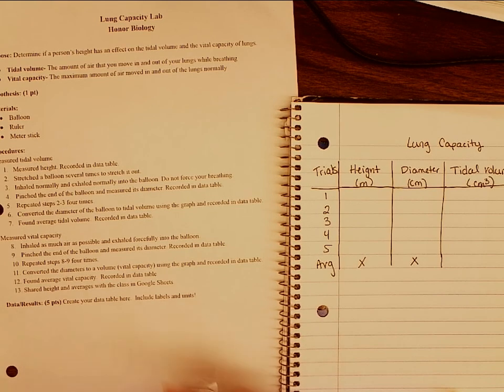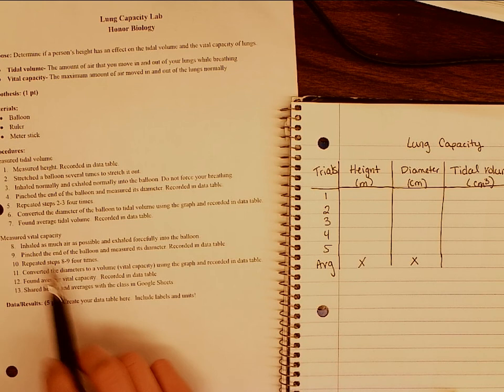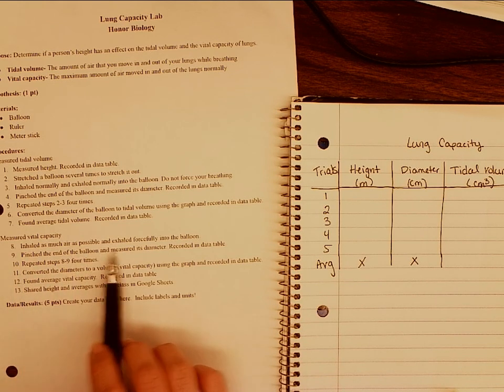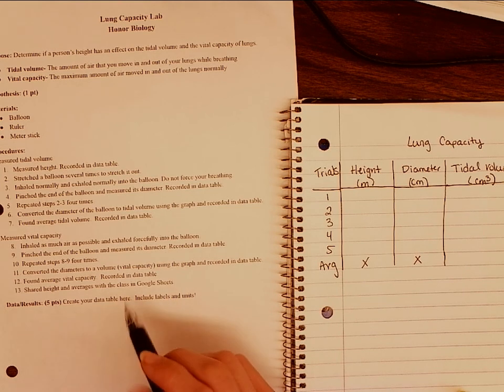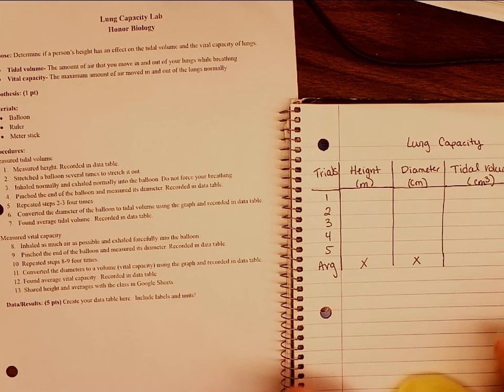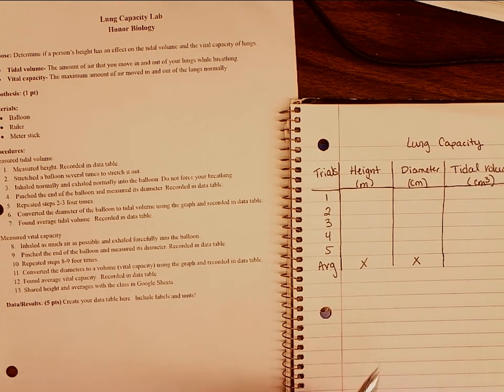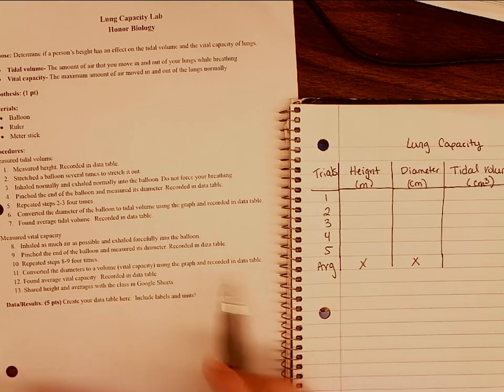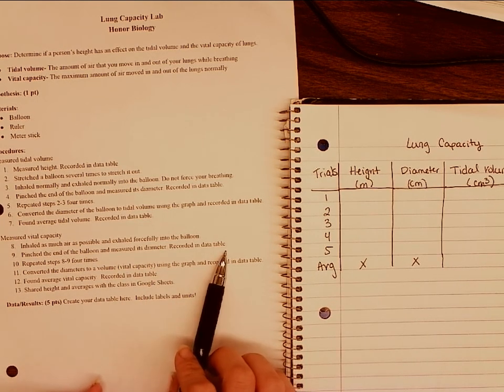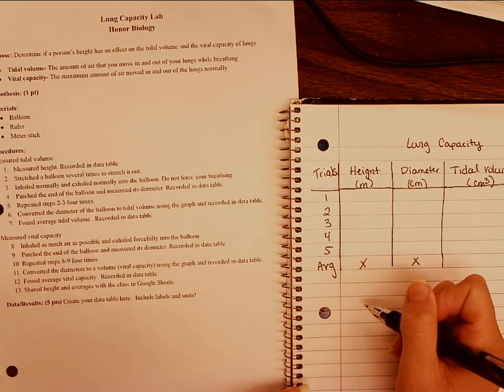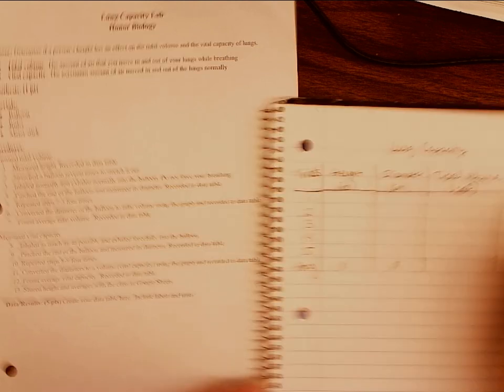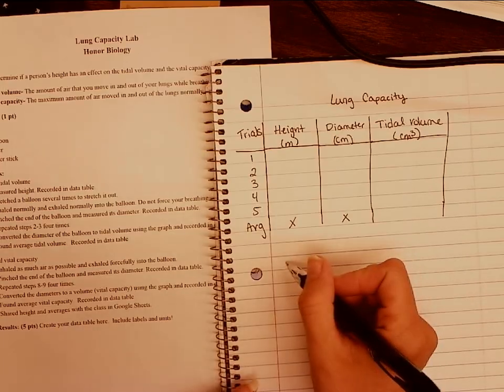Let's go ahead and we'll finish setting up the data table so now that we can see our vital capacity. Alright. Step eight, inhale as much air as possible and then blow all of that air out into the balloon. So we're going to take the biggest breath possible and we're going to fill this balloon as big as we can. We'll do the same thing. We'll pinch the end and we're going to measure the diameter and record in the data table. Alright. So down here, let's start a second data table. If you want, you can keep continuing on with this one, but I'm kind of running out of room. So I'm just going to have this as our second data table.